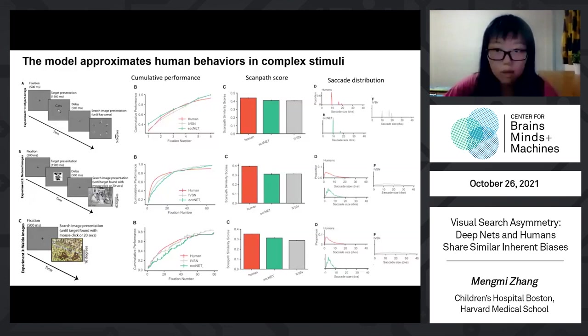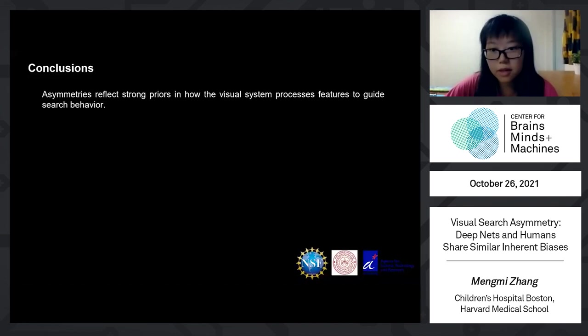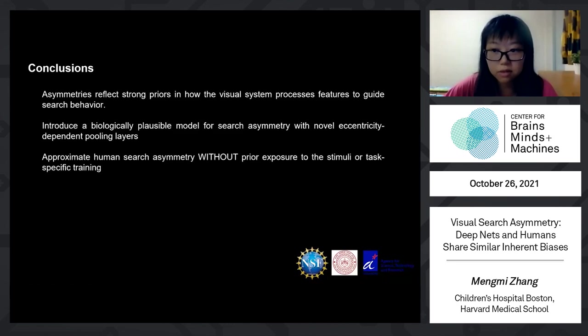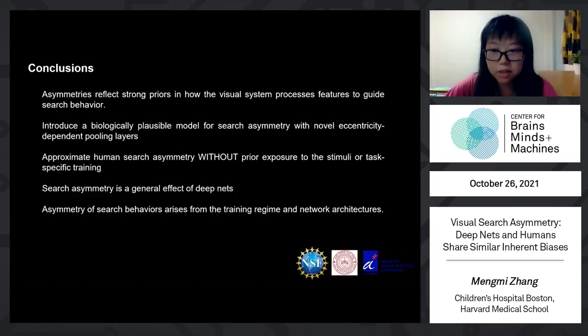Here are several key messages. First, asymmetries reflect strong priors in our visual system and imply how we process features to guide search. We introduce a biologically plausible model for visual search with novel eccentricity-dependent pooling layers. Our model approximates human search asymmetry without any prior exposure to the stimuli or task-specific training. We conducted a series of augmentation studies to alter training data statistics. Our results suggest search asymmetry is a general effect of ECCNet, and that asymmetry of search behaviors arises from both the training regime and the network architecture. Please check out our GitHub page for more information. Thank you.